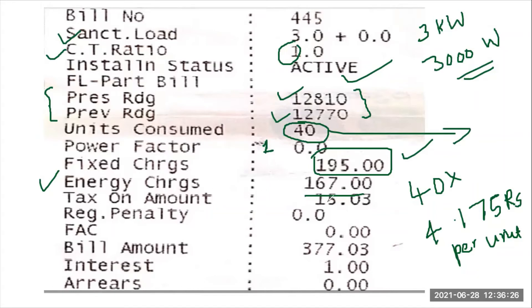The tax amount is 15 rupees. There is no penalty. The FAC (Fuel Adjustment Charge) is currently showing zero. FAC depends on circumstances — the government may impose charges such as 2 paise or 5 paise per unit — but right now it is zero.